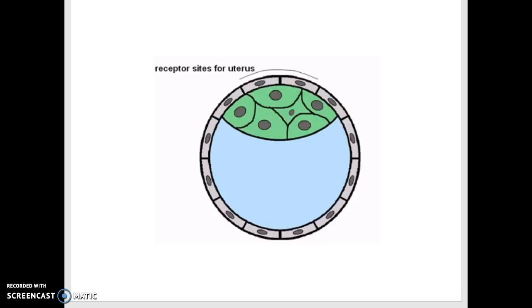This is the blastocyst which contains a single layer of trophoblast cells forming the placenta and the inner mass cells eventually forming the embryo. At day five to six, the zona pellucida breaks and a receptor cell is revealed for implantation in the uterus.